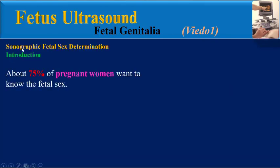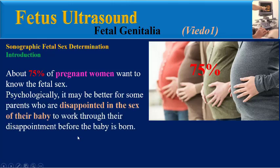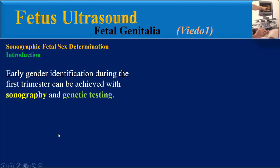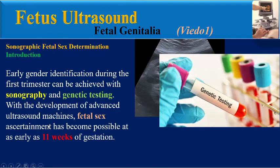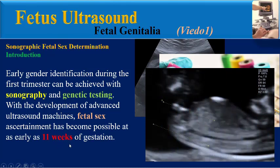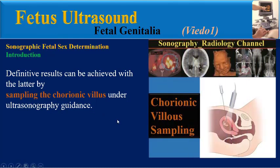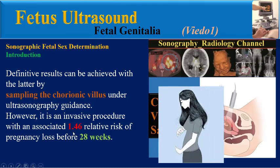Introduction: About 75% of pregnant women want to know the fetal sex. Psychologically, it may be better for some parents who are disappointed in the sex of their baby to work through their disappointment before the baby is born. Early gender identification during the first trimester can be achieved with sonography and genetic testing. With advanced ultrasound machines, fetal sex ascertainment has become possible as early as 11 weeks of gestation. Definitive results can be achieved by sampling the chorionic villi under ultrasonography guidance; however, it is an invasive procedure with an associated 1.5 relative risk of pregnancy loss before 28 weeks.